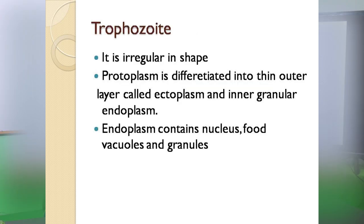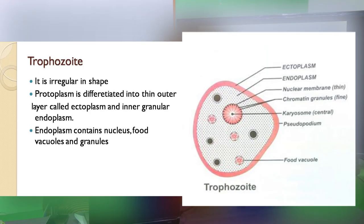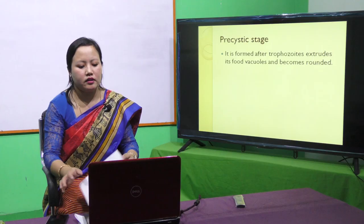The trophozoite form is irregular in shape. The protoplasm is differentiated into a thin outer layer called the ectoplasm and an inner granular endoplasm. The endoplasm contains the nucleus, food vacuoles, and granules.